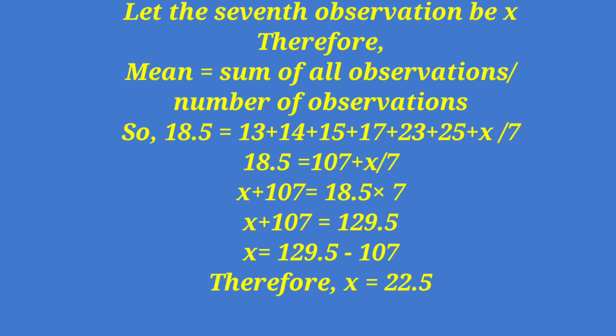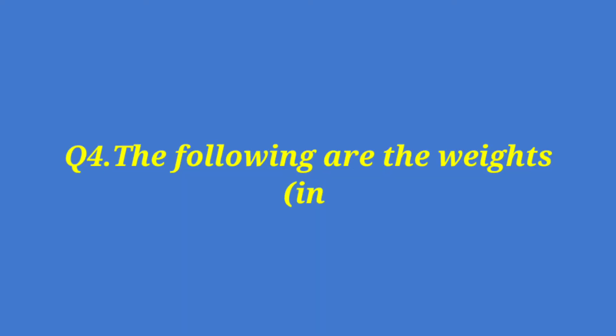So x equals 129.5 minus 107. Therefore, we get x equals 22.5. This is a very interesting sum you must work out on your own.